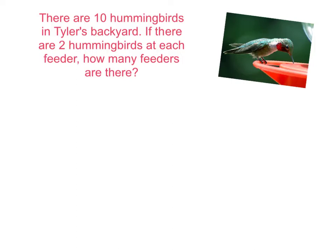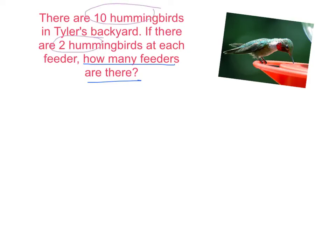Now we're going to draw a model to find how many groups there are, rather than how many are in each group. There are ten hummingbirds in Tyler's backyard. If there are two hummingbirds at each feeder, how many feeders are there? We're looking for how many feeders. We have ten hummingbirds and two at each feeder, so I'll draw and circle pairs of hummingbirds — two at one feeder, three, four at another feeder.